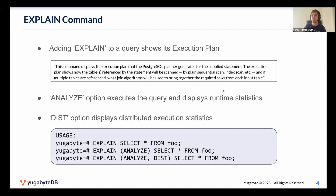While explain analyze works pretty well for standalone Postgres on a single-node system, when you come to a system on the scale of YugaByte that has distributed query execution, you need something more to better understand your queries. That's exactly what the DIST option provides in addition to explain and analyze. DIST is a boolean flag that can be turned on and off when analyze is enabled, and it displays distributed execution statistics from a YugaByte perspective.